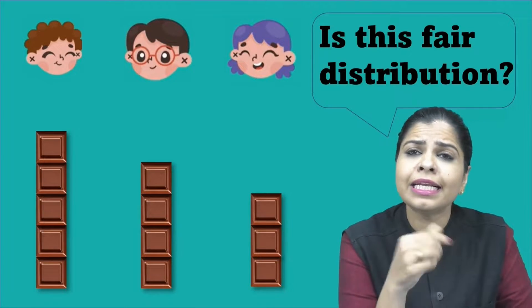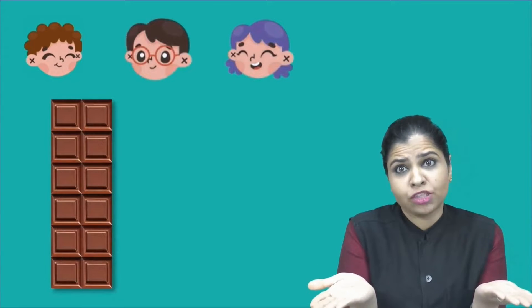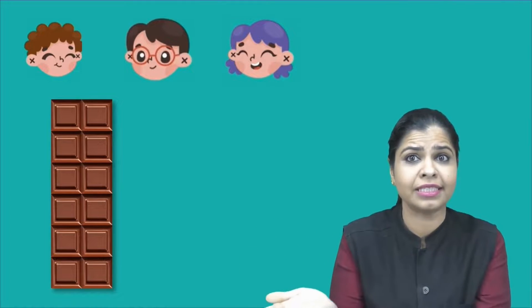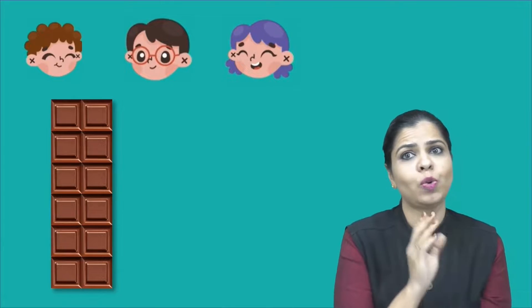To know this, let's go back to the beginning where Chintu had a bar of chocolate. In this bar, as you all can see, how many pieces are there? Twelve pieces. And with how many people does he have to share? Two. He has to share with his two friends. So how many people? Three people. And how many pieces? Twelve pieces.